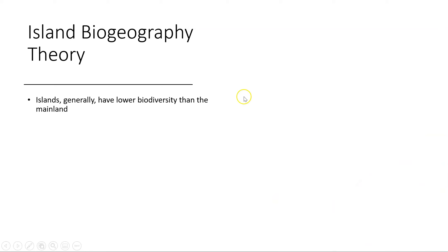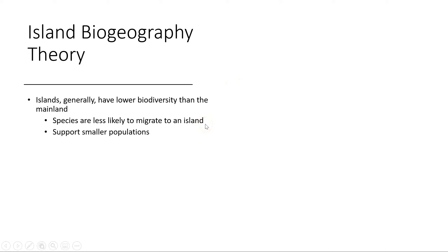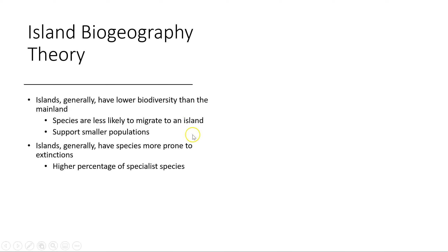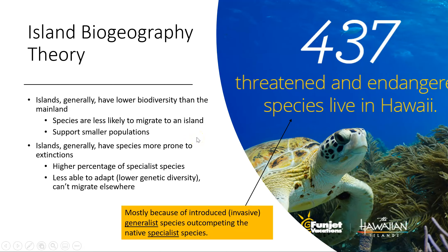This brings us to island biogeography theory. Basically, islands have lower biodiversity than the mainland for several reasons: species are less likely to migrate to an island, and islands can support smaller populations because they're limited in size. As a result, island species are more prone to extinction — partly because there's a higher percentage of specialist species, but also because of lower genetic diversity and no ability to migrate elsewhere.